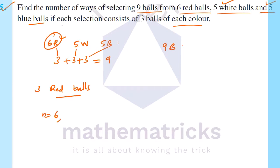We will select 3 red balls, so r equals 3. This is combinations — we will use nCr to find the number of ways.